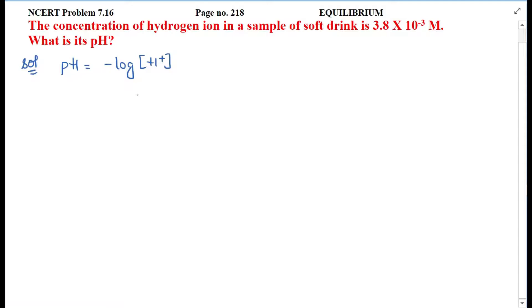How much H+ ions are present? When you have a negative log, you will have pH. So how much is our concentration given? That is 3.8 × 10^-3, right?